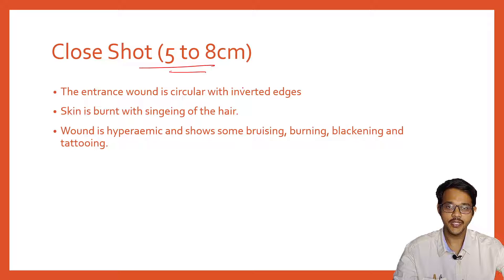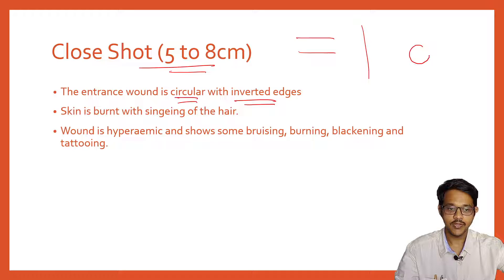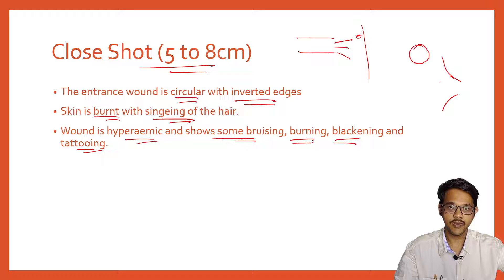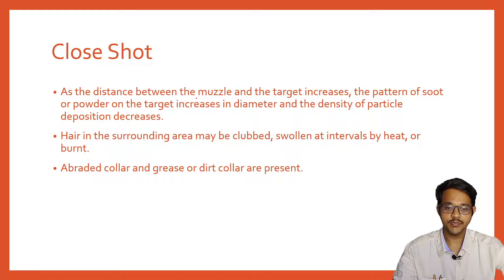Close shot is within five to eight centimeters. The entrance wound is circular and the edges are inverted — this is a typical entrance wound. Skin is burnt with singeing of hair, since the muzzle blast and flames can singe the hairs. The wound is hyperemic and shows bruising, burning, blackening, and tattooing — that is, deposition of unburnt particles within the skin.